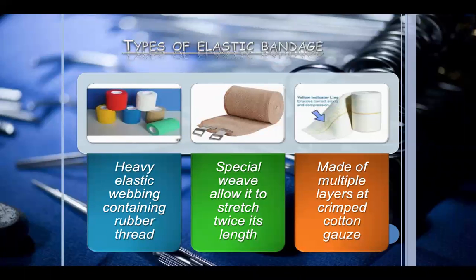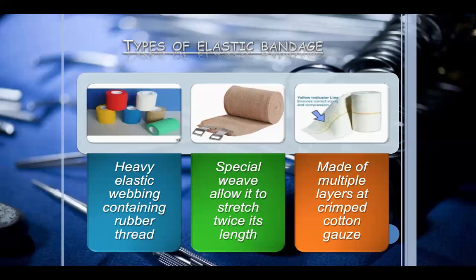Types of elastic bandage include heavy elastic webbing containing rubber thread with a special weave that allows it to stretch to twice its length. According to pharmacopoeia specifications, the crepe bandage has double the normal length when stretched. It is made up of multiple layers of crimped cotton gauze.